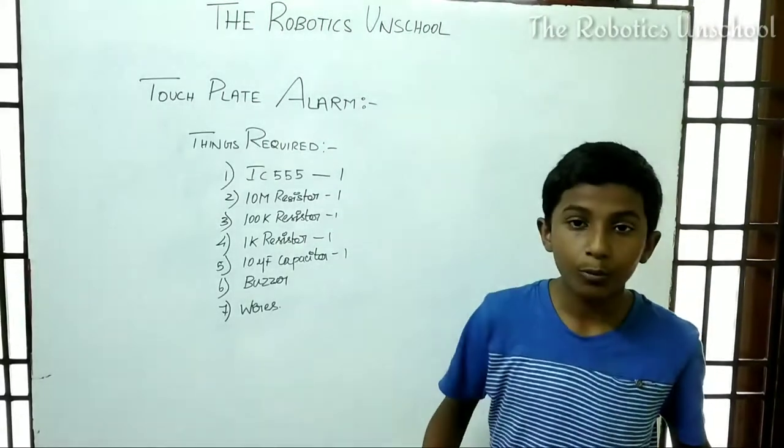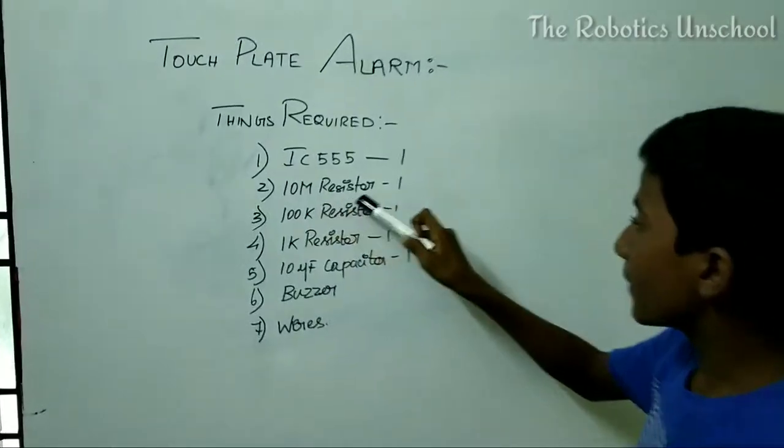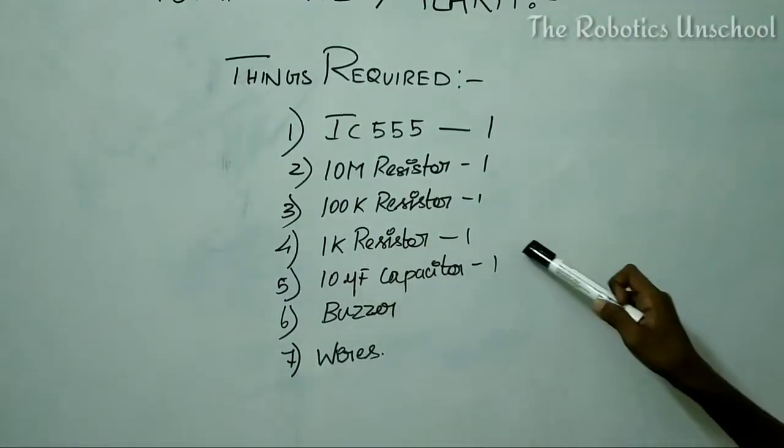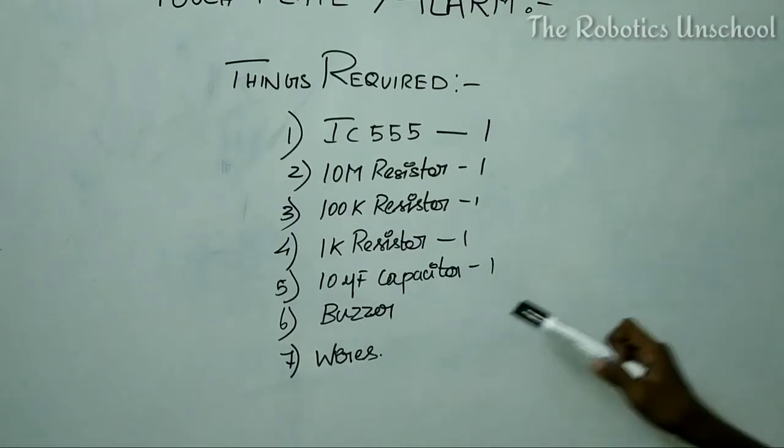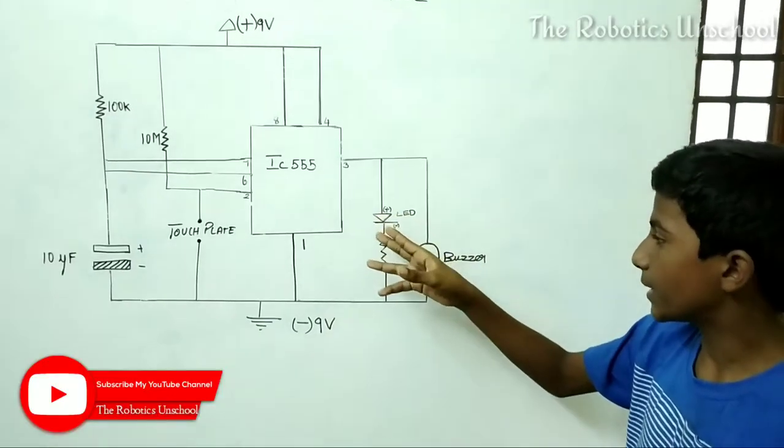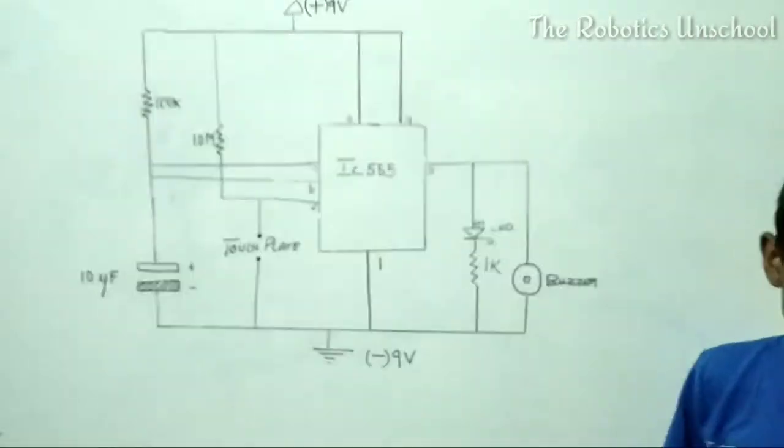Let us see how to do this practically. The things required are: IC 555 one piece, 10M resistor one piece, 100k resistor one piece, 1k resistor one piece, 10µF capacitor one piece, buzzer and wires. This is the circuit diagram of the circuit. We can use either LED or buzzer, or we can use both of them.